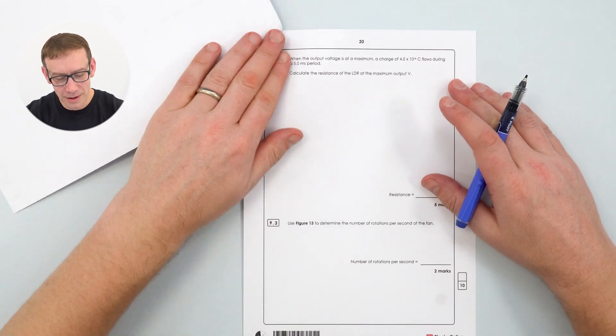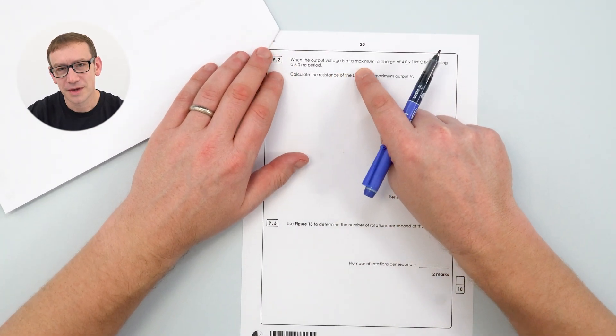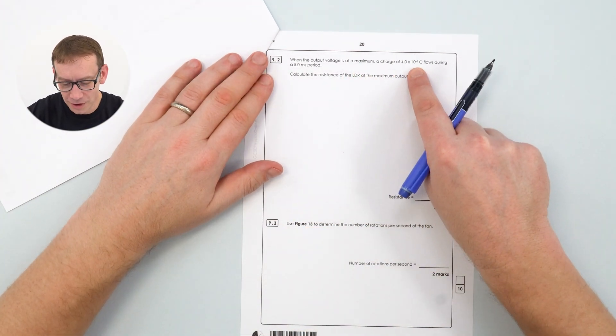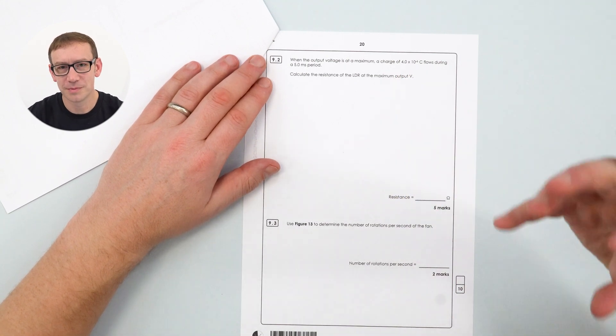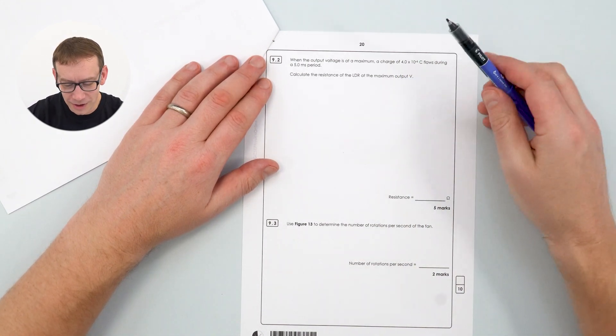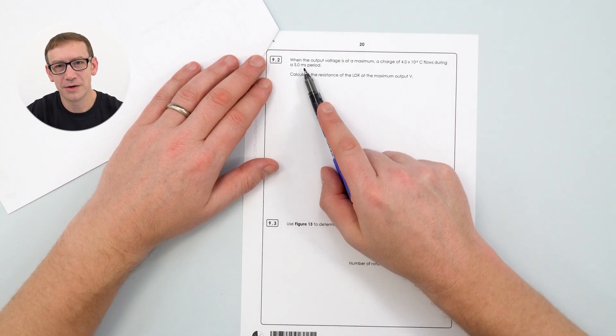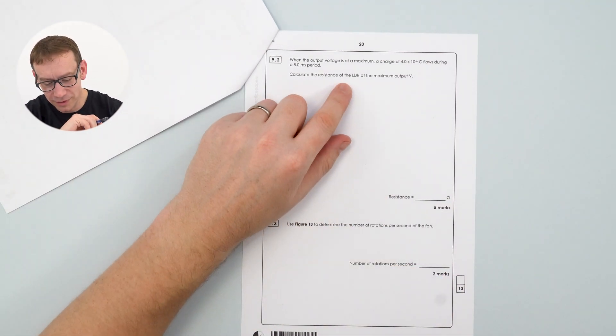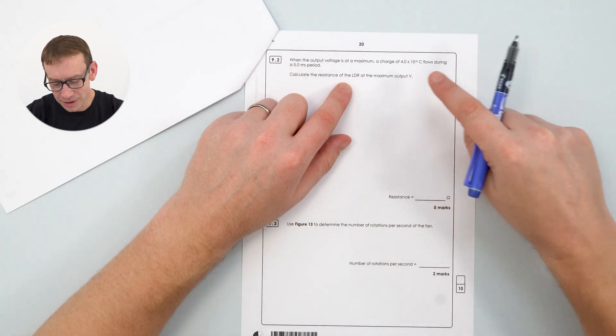Okay the next question then. When the output voltage is at a maximum, and sometimes we use the word voltage, sometimes we use the word potential difference, they mean exactly the same thing. We've got a charge of 4.0 times 10 to the minus 6, so you need to be aware of how to use standard form on your calculator. This flows during a 5.0 millisecond period. Now a millisecond is a thousandth of a second, and we want to calculate the resistance of the LDR at this maximum output. So this is a five mark question, and I reckon this is harder than 99% of questions in real GCSE papers. It's a multi-step question, there are lots of marks available, but you've just got to follow the same steps every time you get to a question like this.